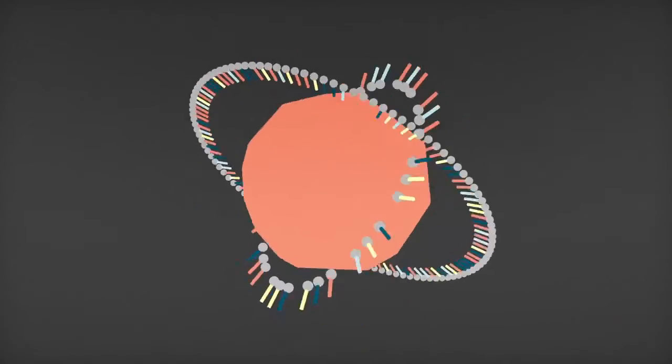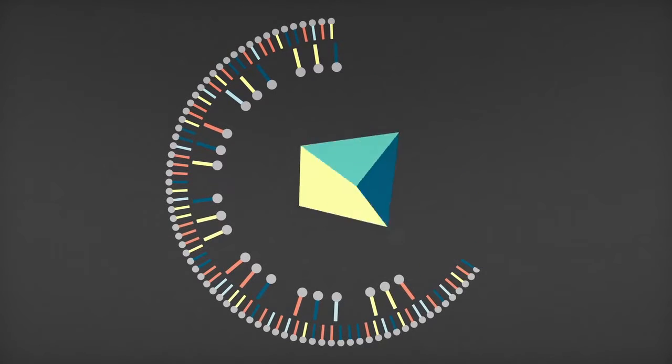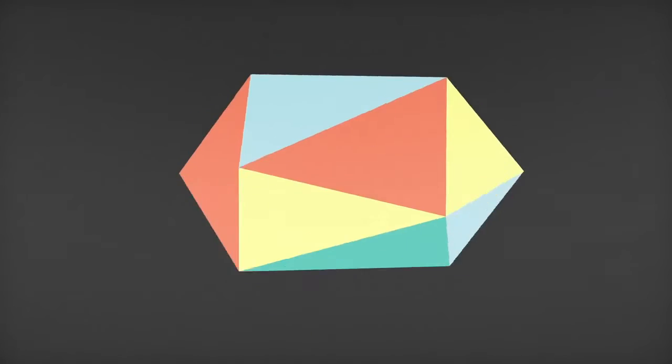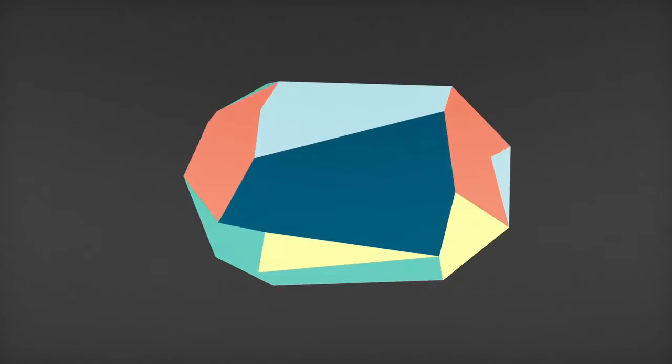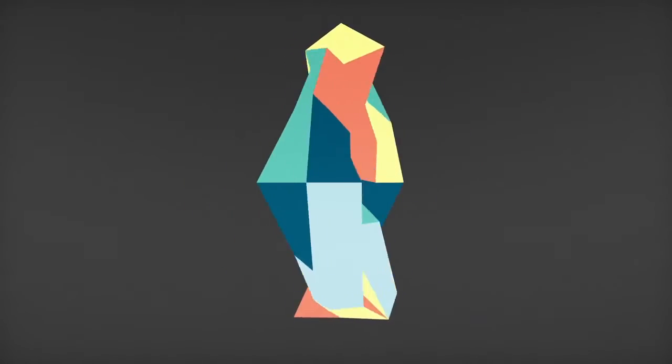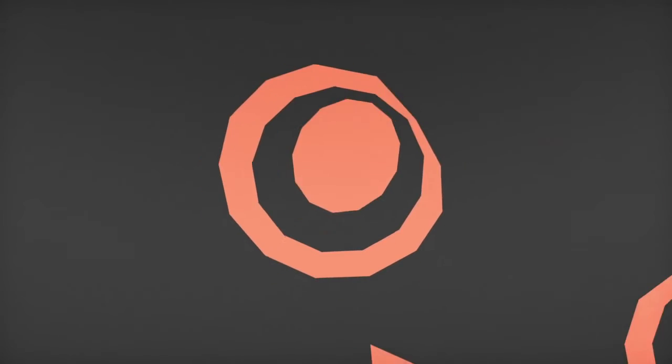Chromosomes contain many genes. A gene is a section of DNA that holds the instructions for a protein. Proteins are essential for life and perform a huge variety of jobs, from controlling the function of a single cell to determining the shape of a whole organism.